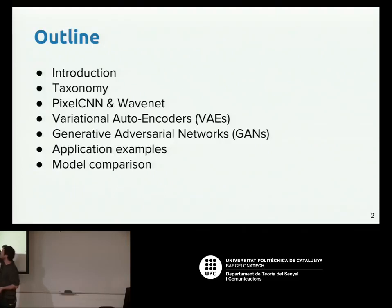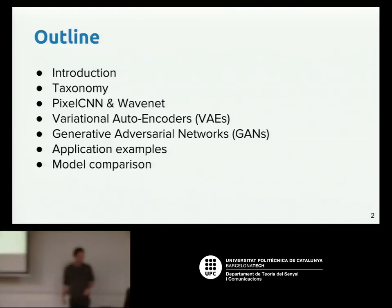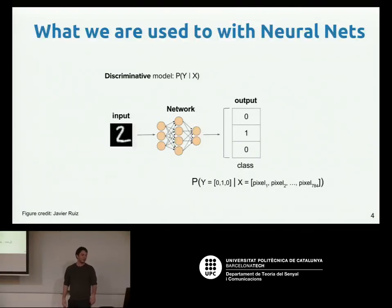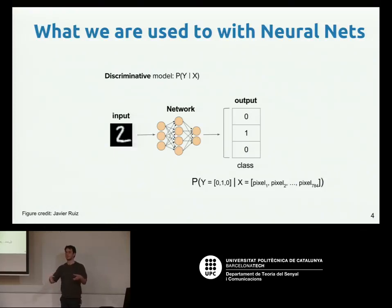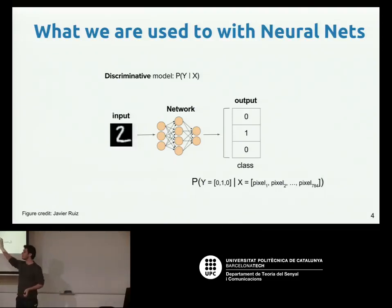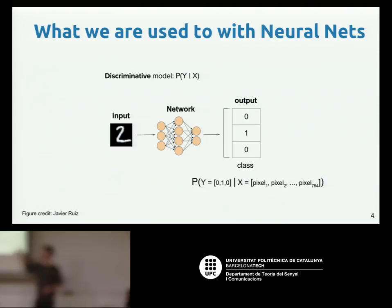Today we'll review up to a certain point and then next day we'll cover the last three topics. So let's begin with what you're probably used to with networks. So far what you've seen is discriminative modeling. Apart from supervised, unsupervised, or reinforcement learning, you can model the data by either making the network discriminate something — the label from the input data, for instance an image — or to take care of how the data was generated.